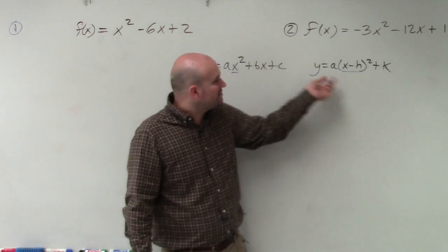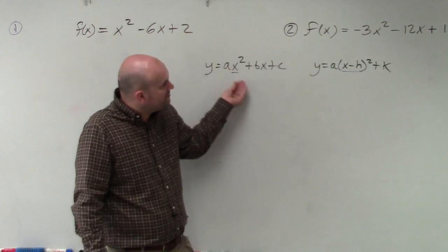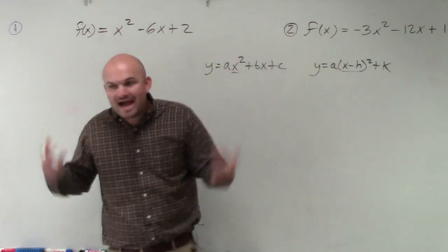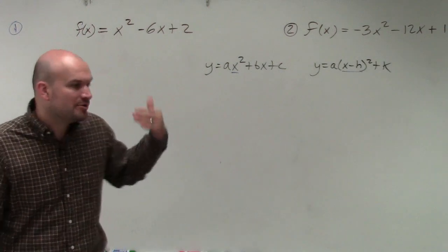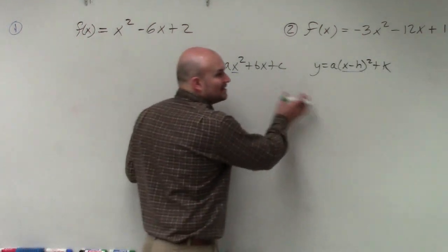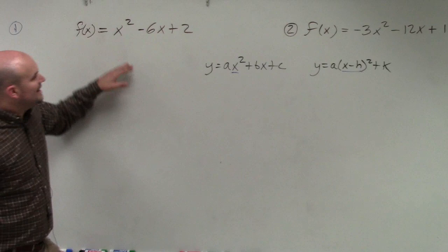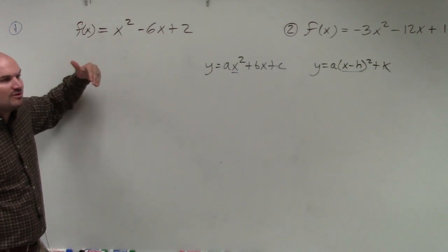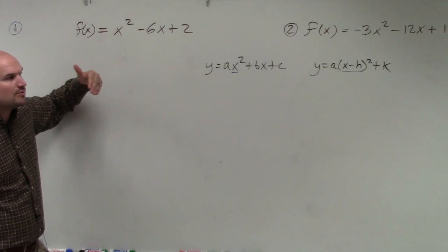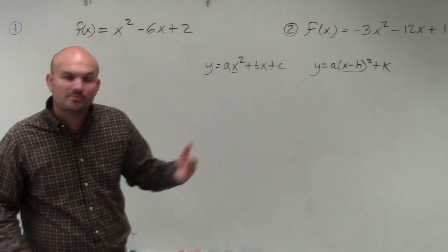So what's important to go from standard to vertex is we have to create a binomial squared. We have to create a binomial squared. And what's important about that, or what's understanding about a binomial squared is how do we create binomial squareds?